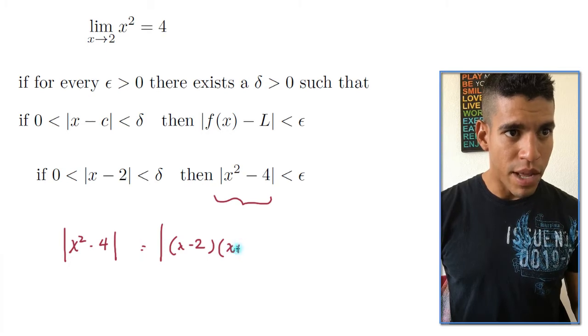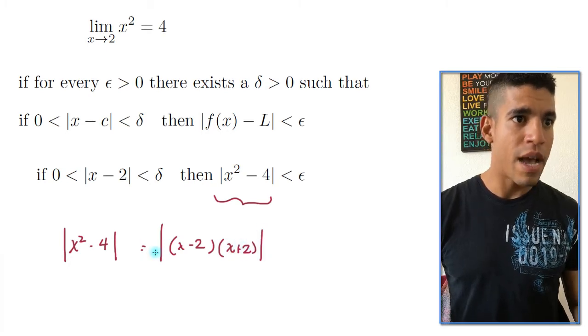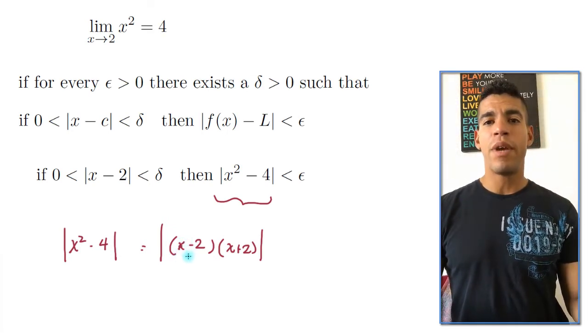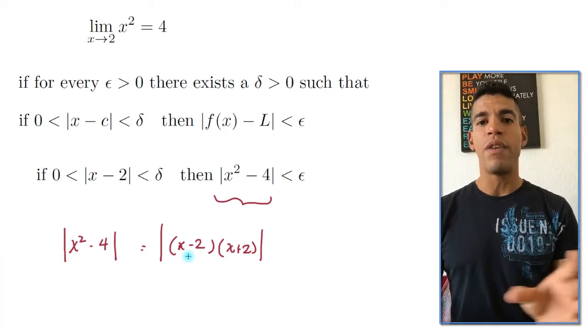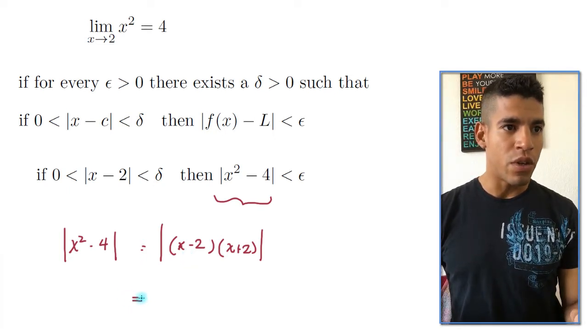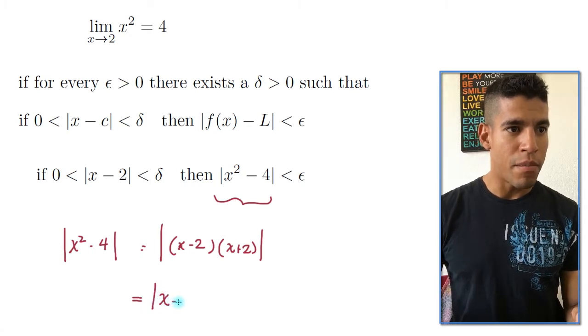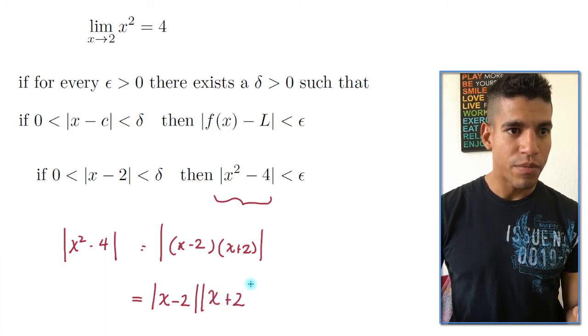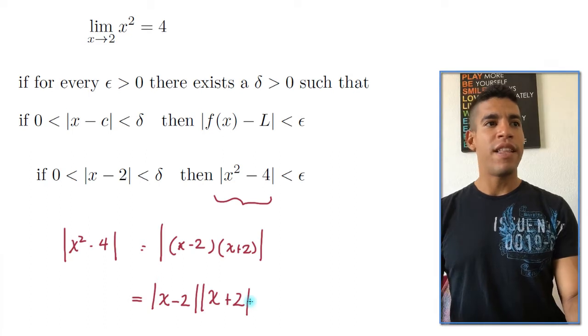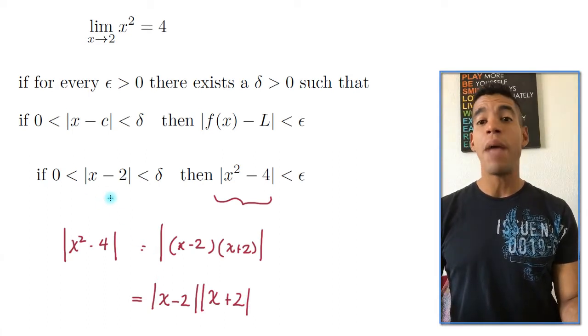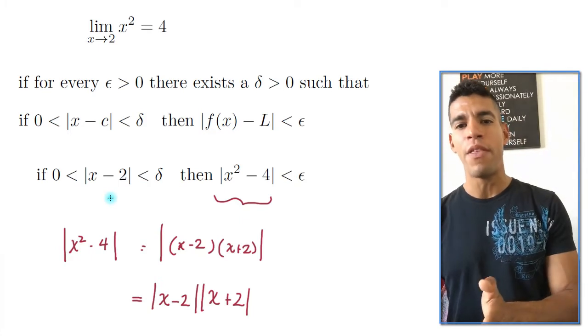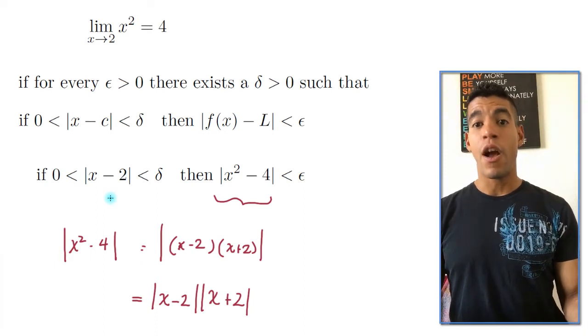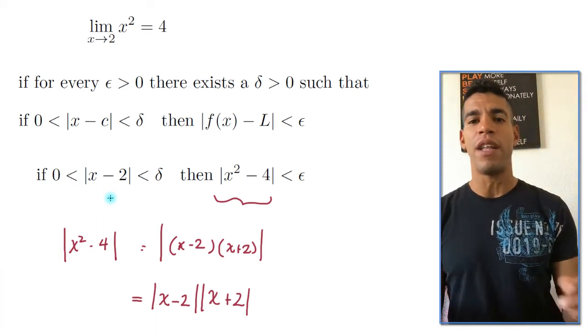And x plus 2. Now by properties of absolute value, we can separate these two products into two different absolute values. So this is equal to the absolute value of x minus 2 times the absolute value of x plus 2. And notice immediately that the absolute value of x minus 2 is the hypothesis. And you always want to look for the hypothesis in the conclusion.